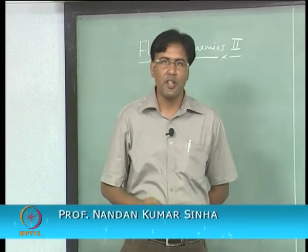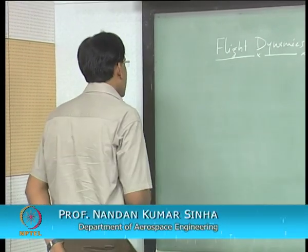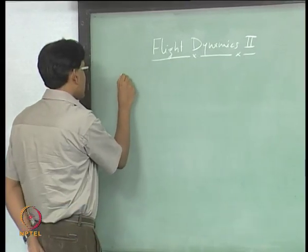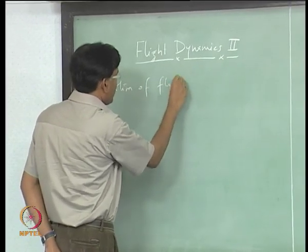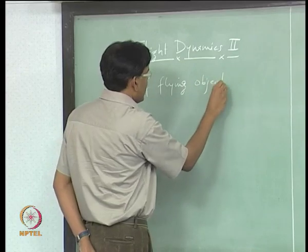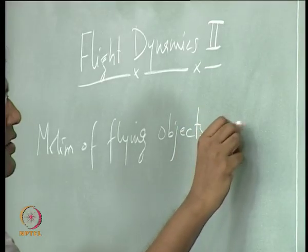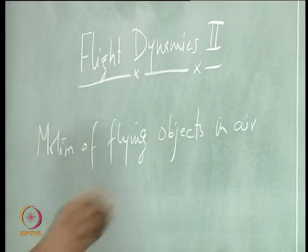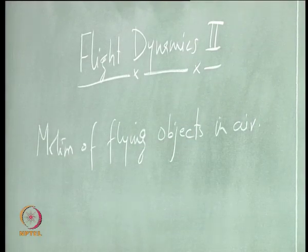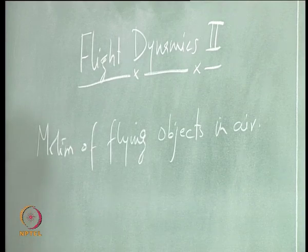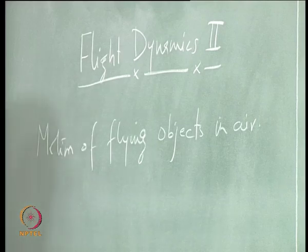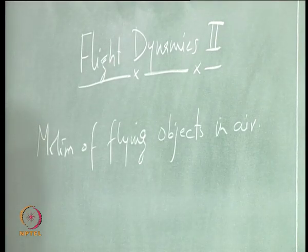Flight Dynamics 2 is the name of this course. In this course, we are studying the motion of flying objects in air. The motion we will study is about the equilibrium condition. We assume that the object we are looking at is in a flying steady equilibrium motion.